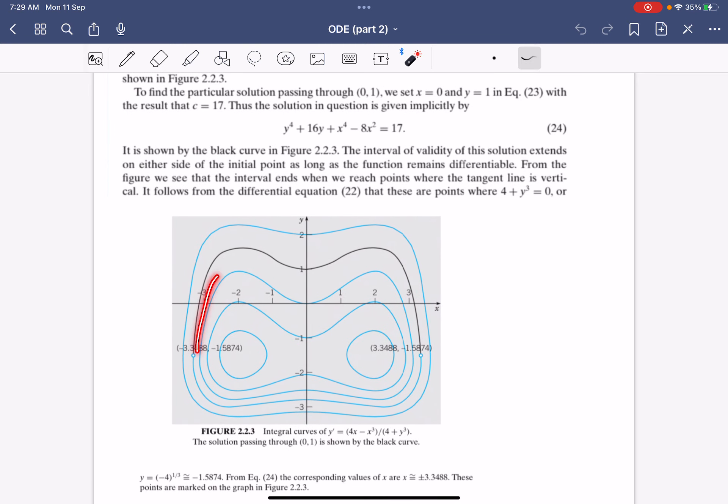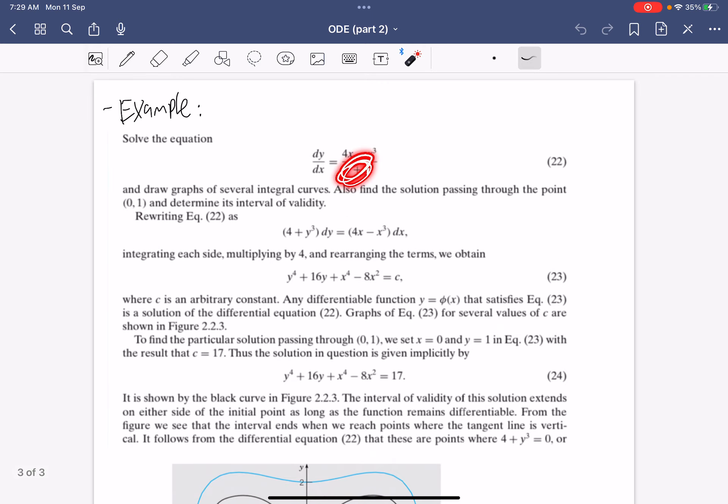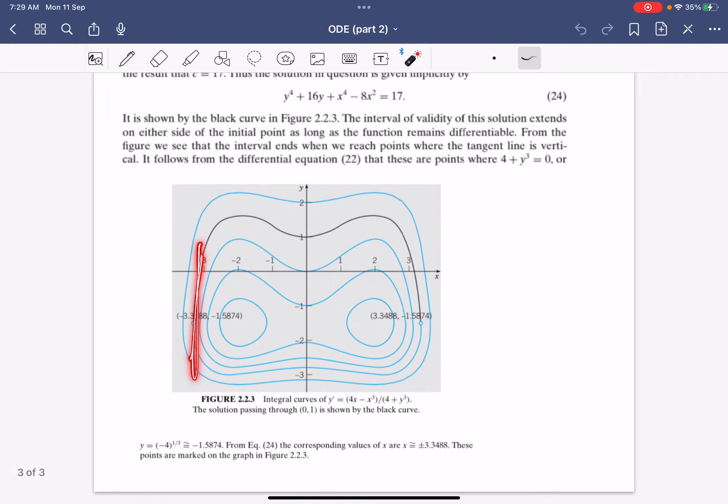We substitute to find C = 17, which gives us the curve. The black curve represents the solution. Once y goes close to -∛4, that causes it to be undefined because the gradient is vertical. You must draw a hollow circle there, and the domain is just within this range.